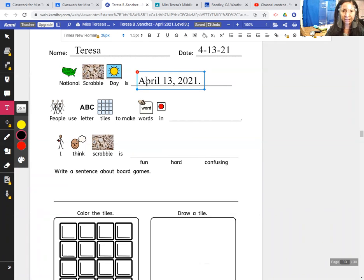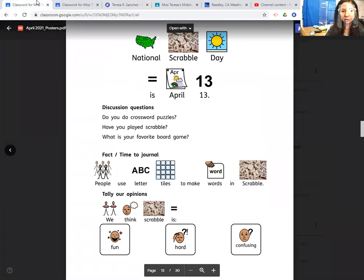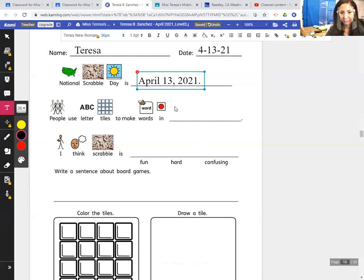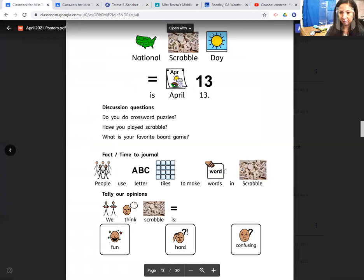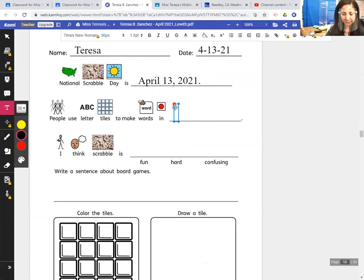So it's capital A-P-R-I-L, April. And people use letter tiles to make words in blank. What word? What's today? Scrabble Day. They use letter tiles to make words in Scrabble. So I guess we're going to capitalize Scrabble here because it was capitalized in the sentence. So it's capital S-C-R-A-B-B-L-E, Scrabble.